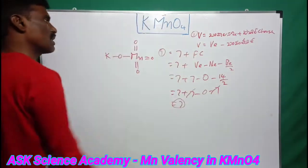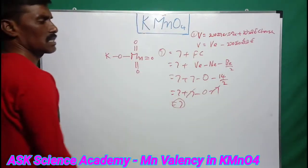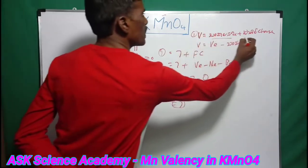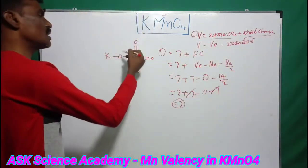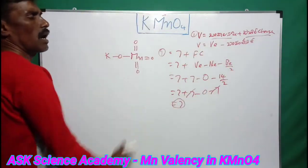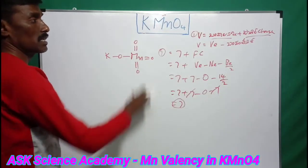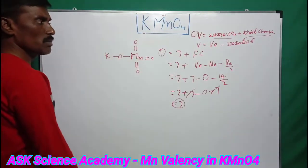So the formal charge of manganese is 0. Therefore, the manganese valency equals 7. The valency equals the number of bonds plus the formal charge. Using the atom's valence, we confirm manganese valency in potassium permanganate is 7.